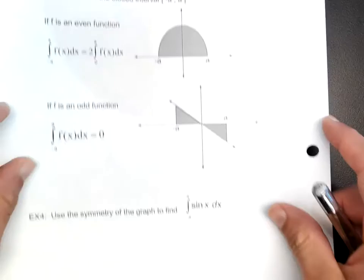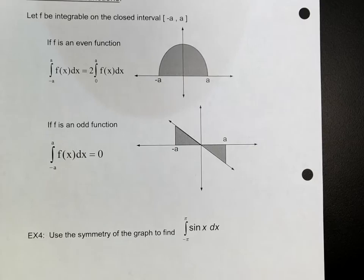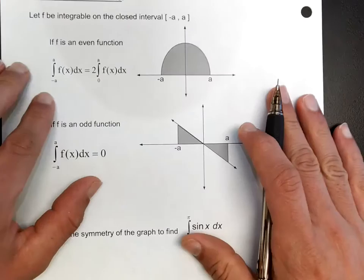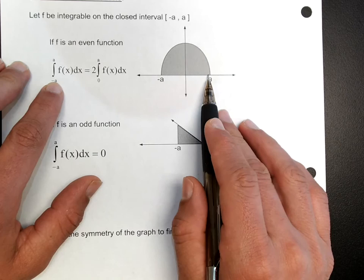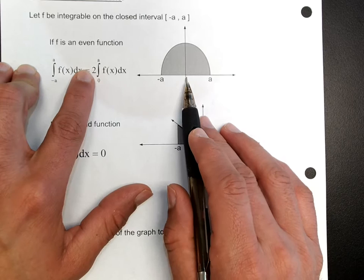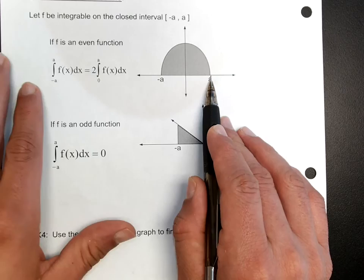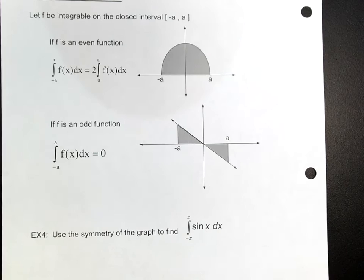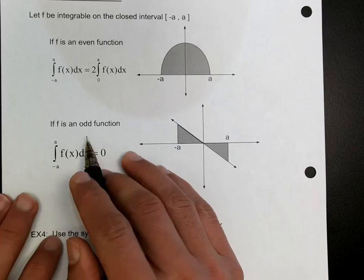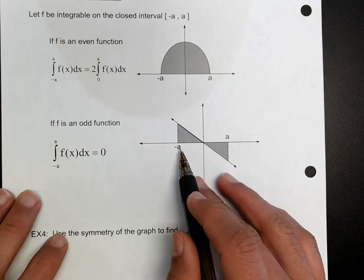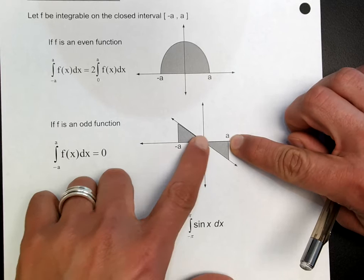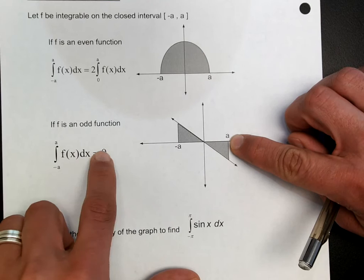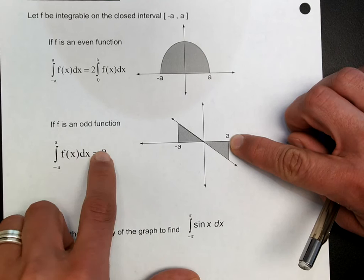On the back, there are a couple of really useful rules. If you have an even function and you're integrating between negative a and a, the integral equals 2 times the integral from 0 to a — you only need to find the integral from 0 to a and multiply by 2. It's even more useful for an odd function: if you're integrating an odd function between negative a and a, the integral is always 0 — you don't have to do much math at all.